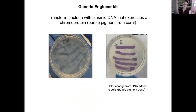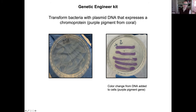Another part of the kit involved actual genetic engineering. Students used competent cells, added a plasmid designed to express a pigment, and successfully engineered bacteria to express a color. You can see the plate — no color originally, and then because they successfully added their plasmid, the bacteria now express this color pigment.